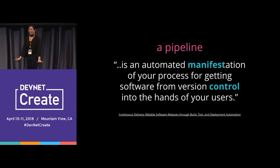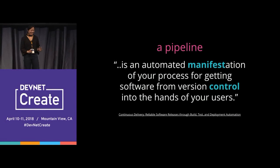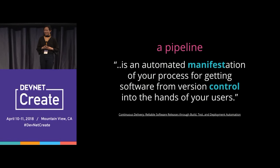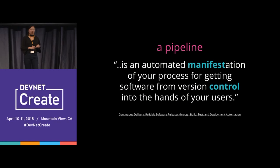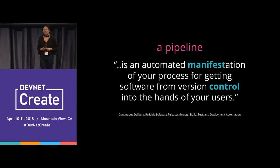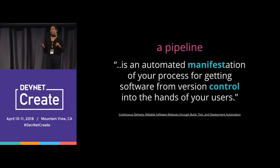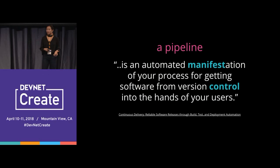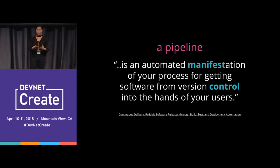What's a pipeline? The true definition, per Jez Humble from Continuous Delivery, is: a pipeline is an automated manifestation of your process for getting software from version control into the hands of your users. In the infrastructure space, your users are application development teams. Two key focuses: first, a pipeline is a manifest — a reflection of your expectations, your design principles that you've agreed upon, and your conformance tests checking for broken patterns. Your architectural decisions are now in a coded pipeline.